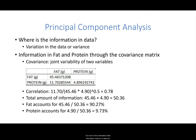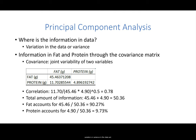To answer these questions, we need to first understand what information means in a dataset. Information is defined as variation or variance in the data. Imagine that you have a very large dataset with millions of observations, but if all the values are zeros, there is no information in that dataset. The same would be true if the only values are ones or any other number, because there is no variation or variance in the dataset.